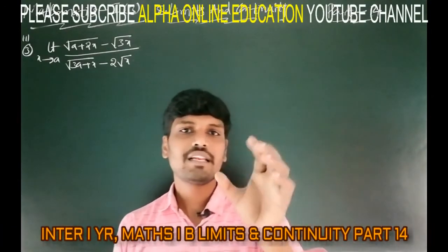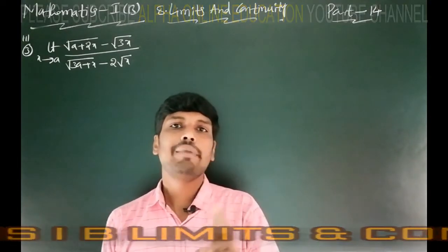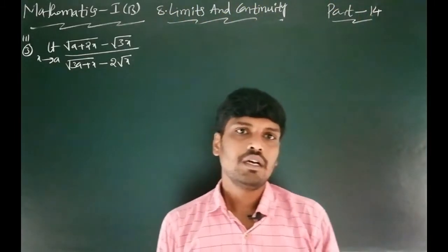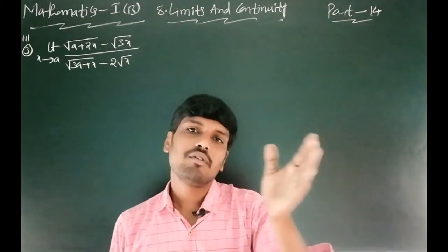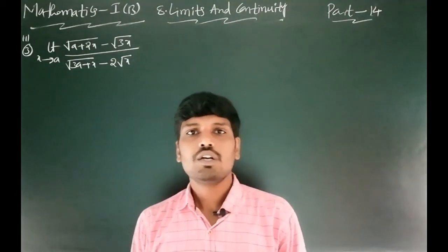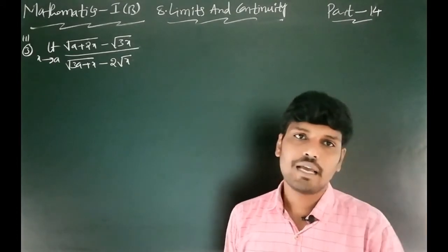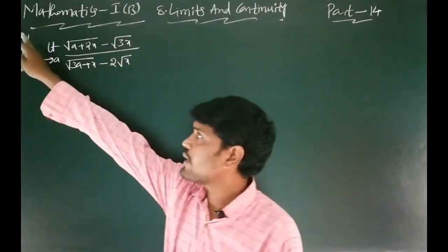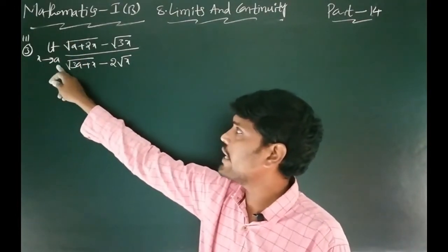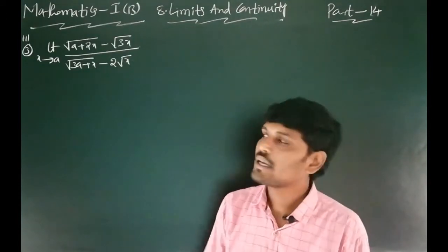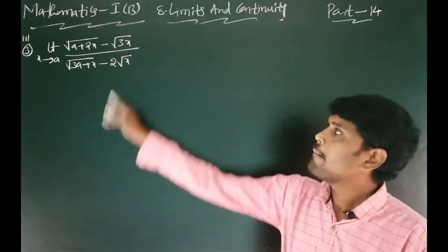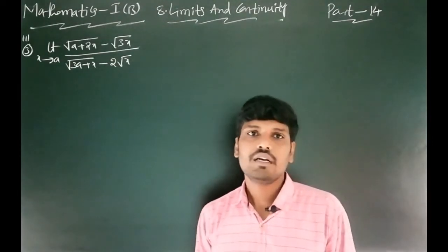Chapter 8: Limits and Continuity — Mathematics 1B, Part 14. Today we complete standard limit formulas and explain that type of problems. This problem belongs to Roman numeral 3, question number 3: limit x tends to a of square root of (a plus 2x) minus square root of 3x, all divided by square root of (3a plus x) minus 2 root x.